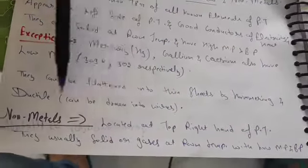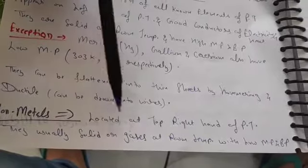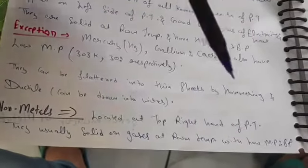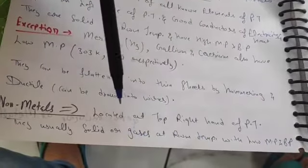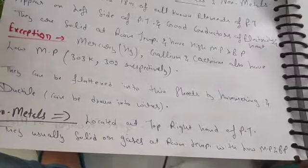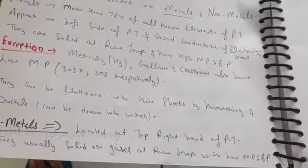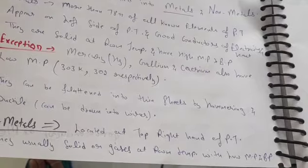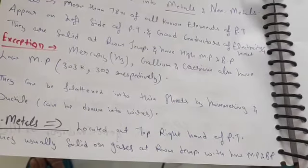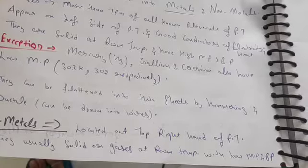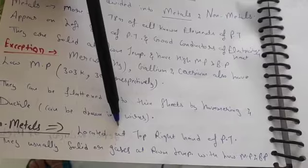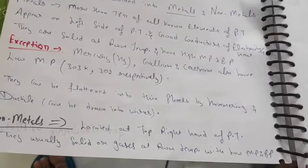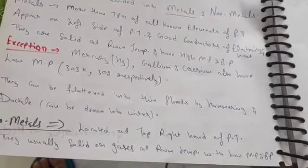Now proceeding with non-metals. Non-metals are located at the top right hand of the periodic table. They are usually solid or gaseous at room temperature with low melting and boiling points.